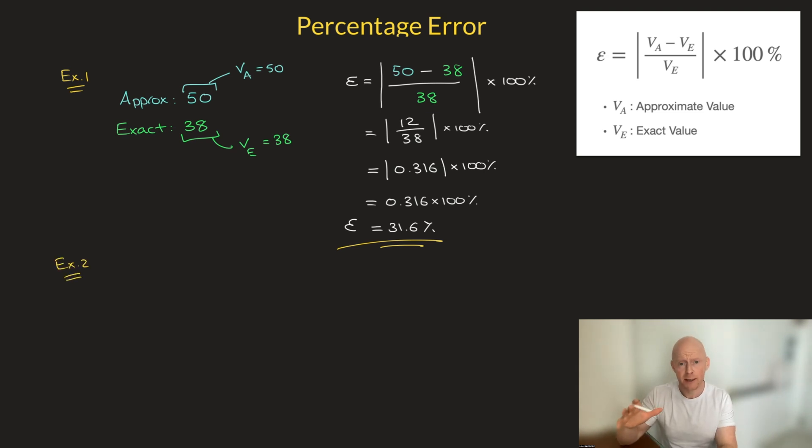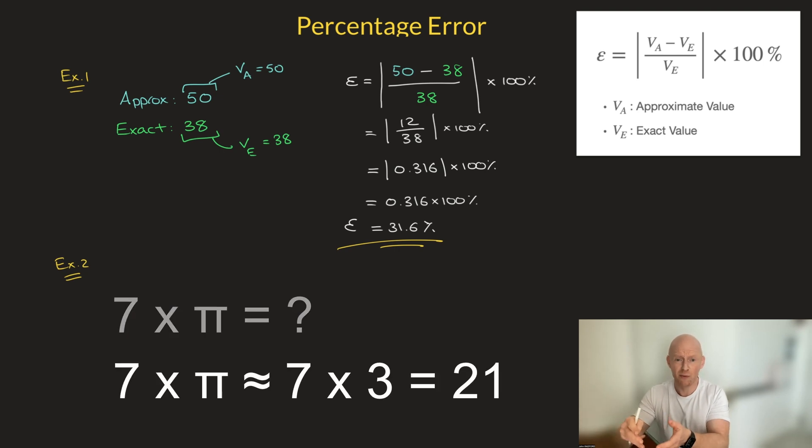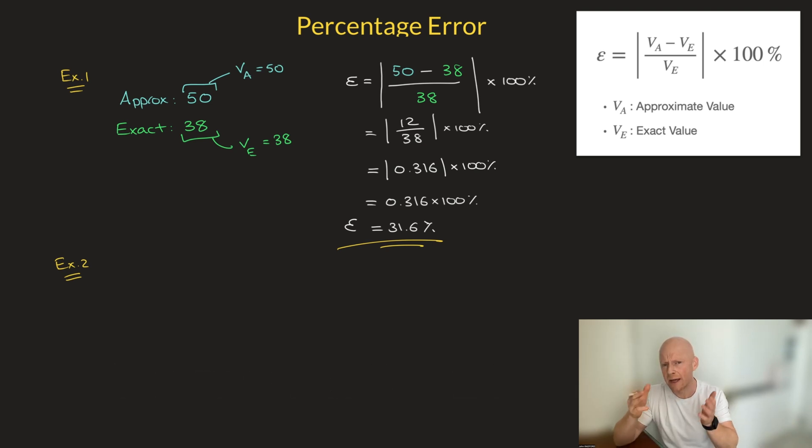Now in this second example, let's say I'm interested in finding out how much error I make when I approximate the number pi by 3. And I should say I do that quite a bit. For instance, let's say I had to calculate 7 times pi and I don't have a calculator handy, then I would quickly just say, well, 7 times pi is roughly equal to 7 times 3, so that's roughly equal to 21. But how much error is there when I make approximations like that? Well, to answer that question, we can use the percentage error formula again. Now in this case, my approximation would just be 3. Remember, I'm saying that pi is roughly equal to 3. My exact value, on the other hand, the exact value of pi, well, is just pi. So for our formula here, V_A would be 3, and V_E, well, that would be pi.